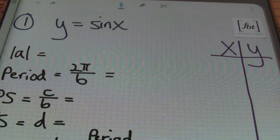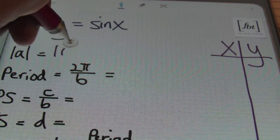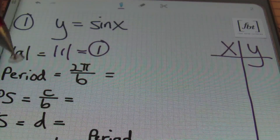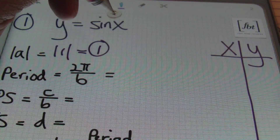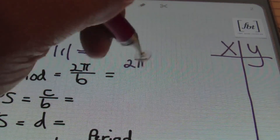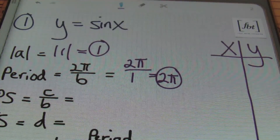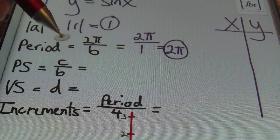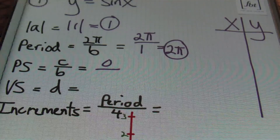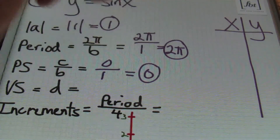We're going to start by finding our amplitude. Remember, your amplitude is the absolute value of the a value — here a is 1, so the amplitude is 1. For the period, the coefficient in front of x is your b value, which is also 1 here. So 2π divided by 1 gives us a period of 2π. For the phase shift, that's c over b — my c value is zero, so zero over one is zero, meaning I have no phase shift and I start at zero.